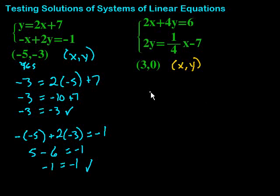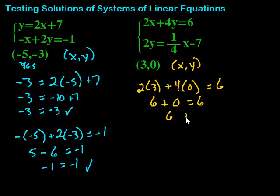Plug that in for x right here. So, we have 2 times 3 plus 4 times y. Well, y is 0. So, 4 times 0 equals 6. 2 times 3 is 6. 4 times 0. Don't forget to follow the order of operations here. Sometimes, we forget about that. Plus 0 equals 6. 6 plus 0 is 6. And that is equal to 6. So, that works.